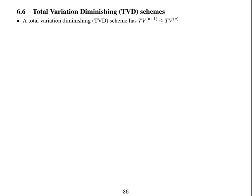A total variation diminishing scheme must have TV at time level n+1 less than or equal to TV at time level n. First order upwind is the only linear TVD scheme. Other TVD schemes are non-linear.